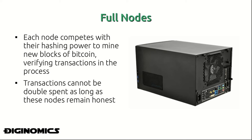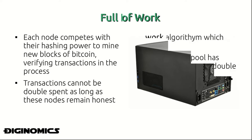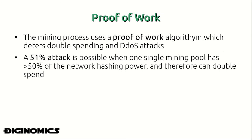A full node competes with its hashing power to mine new blocks of Bitcoin, and in the process verifies transactions being made. These transactions cannot be double-spent as long as the nodes remain honest and the mining pool does not comprise 51% or more of the network hashing power.